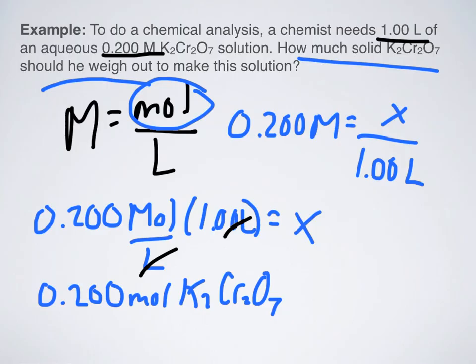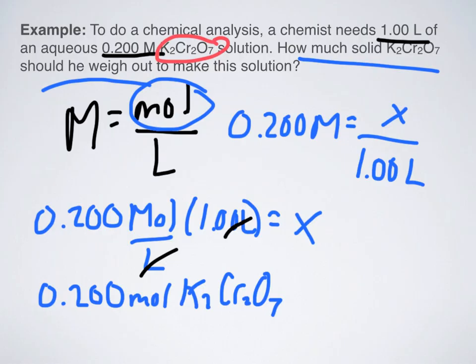Now all I need to do is know the molar mass of my substance. I need to find the molar mass of K2Cr2O7, and then I can find my number of grams. So using your periodic table, what do you find the molar mass of K2Cr2O7 to be? Well, depending on how you round, I got about 294.